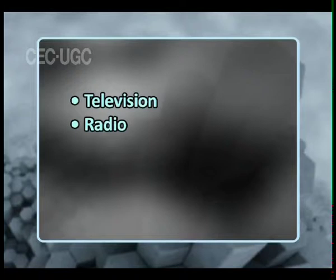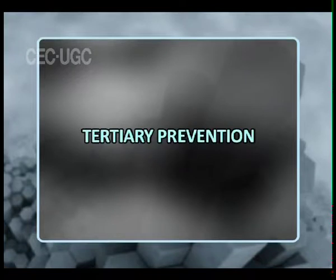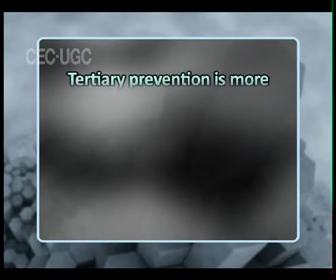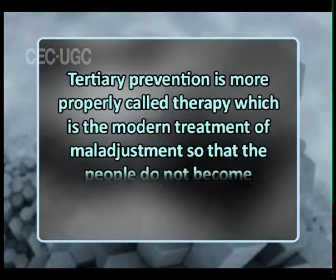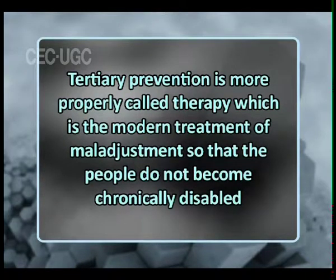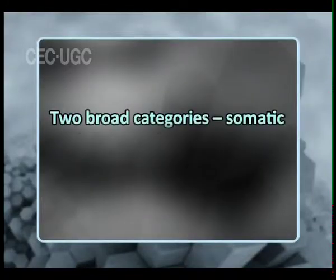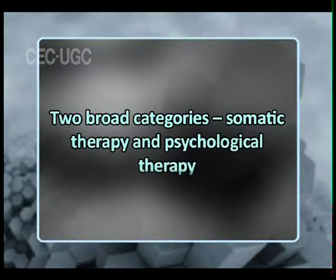Television, radio, newspapers, popular magazines, and other channels of communication have been used extensively to make the public aware of mental disorder as a treatable illness and to combat the superstitions with which these ailments have been viewed. Then tertiary prevention is more properly called therapy, which is the modern treatment of maladjustment so that people do not become chronically disabled. The major forms of treatment used in rehabilitation may be classified into two broad categories: somatic therapy and psychological therapy.